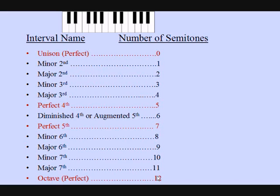Let's prove that the octave has twelve semitones. If we go from C to C, we count one, two, three, four, five, six, seven, eight, nine, ten, eleven, twelve semitones.